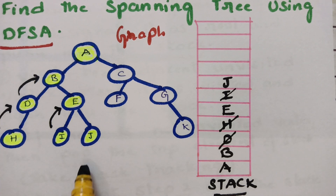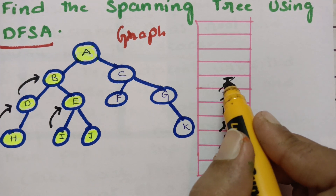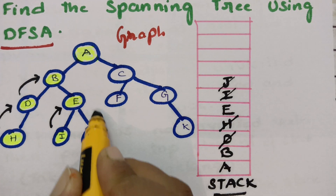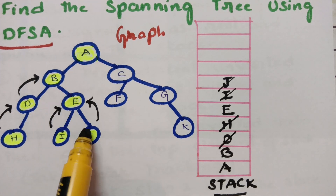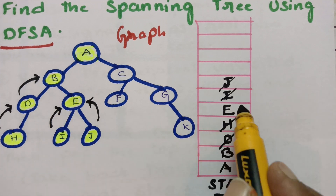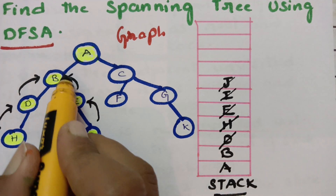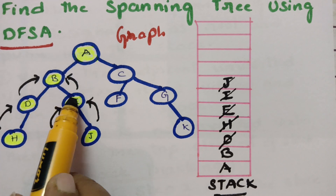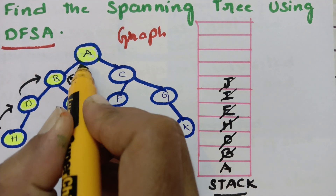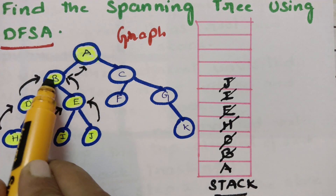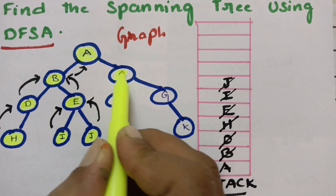After J there is no way to go deep into the graph, so pop J and go to the next top element E. From E all adjacent vertices are now visited, so pop E and go to the next top element B. From B all three adjacent vertices are visited, so pop B and take backtracking to A. So I am going to A — A has two children, left child B is visited, and now I am going to visit the right child C.